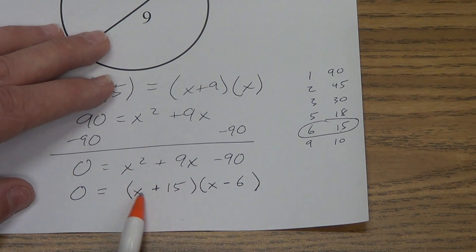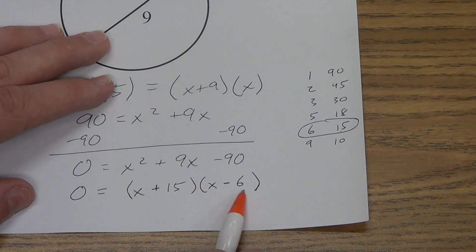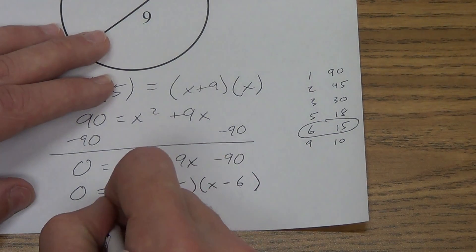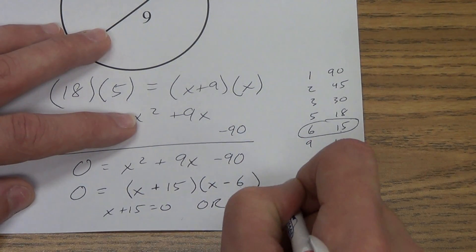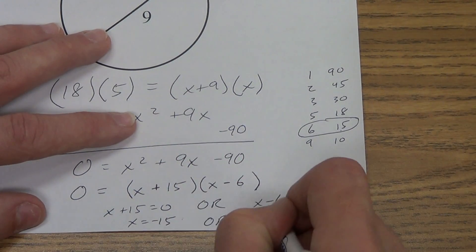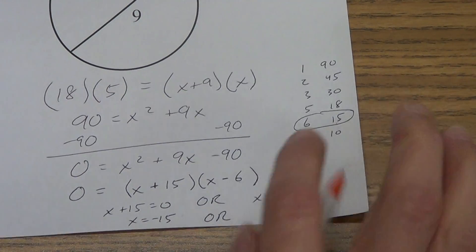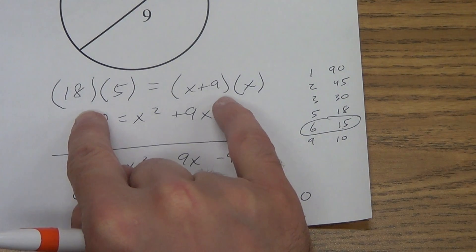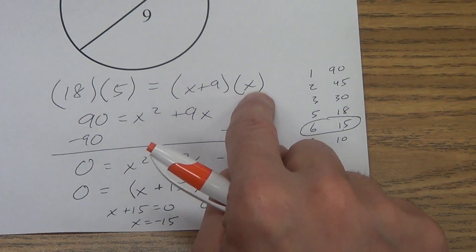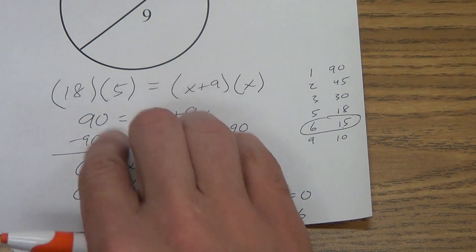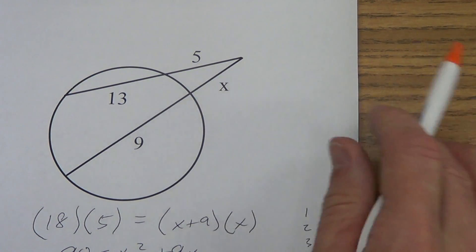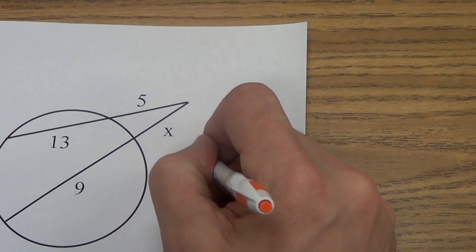Now, if I have something here, and something here, and I multiply them together and get 0 for an answer, one of these parentheses must equal 0. So, either x plus 15 equals 0, or maybe it's the x minus 6 part that equals 0. And I solve this, and I get x equals negative 15, or maybe it's x equals 6. In geometry, this is a distance, and this distance is not going to be negative. So, we're going to take that negative answer, we're going to just ignore it, and we're going to say x equals 6 units.